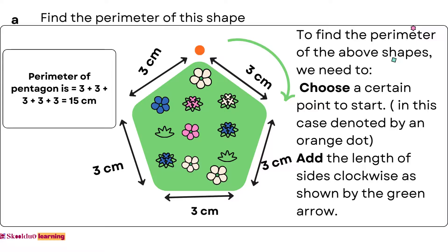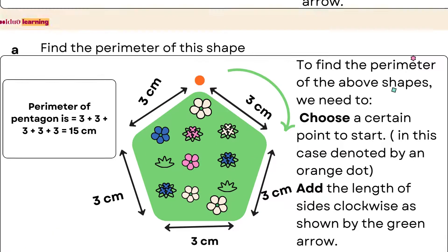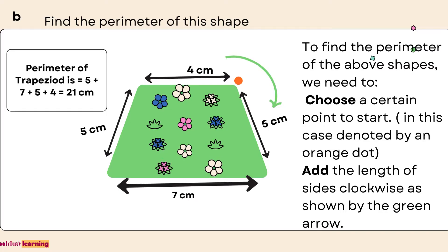A. Perimeter of the pentagon is equal to 3 plus 3 plus 3 plus 3 plus 3, which is equal to 15 cm. B. Perimeter of the trapezoid is equal to 5 plus 7 plus 5 plus 4, which is equal to 21 cm.